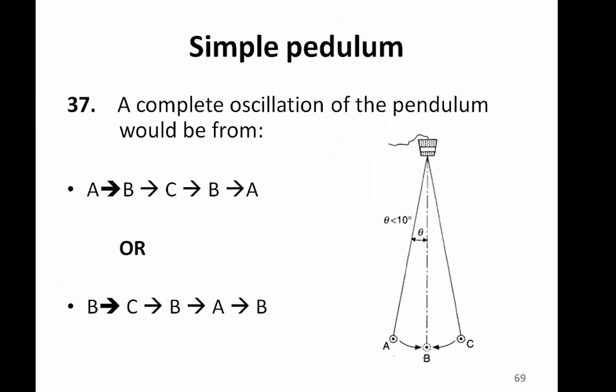We may set a pendulum into motion by slightly displacing the mass with a small angle. However, we can count the oscillation by allowing the pendulum to oscillate between A to B to C to B, back to A again. That is counted as one oscillation.